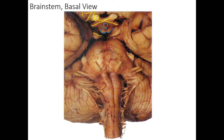Next, we have the oculomotor nerve, cranial nerve three — we can see that coming out right there. After cranial nerve three, we have the trochlear nerve, cranial nerve four. Remember, the trochlear nerve is an exception to all the other cranial nerves because it exits the brainstem from the posterior side and then wraps around laterally to head through the superior orbital fissure. It's very difficult to see, but you can just make out a little bit of the fiber of cranial nerve four on both sides.